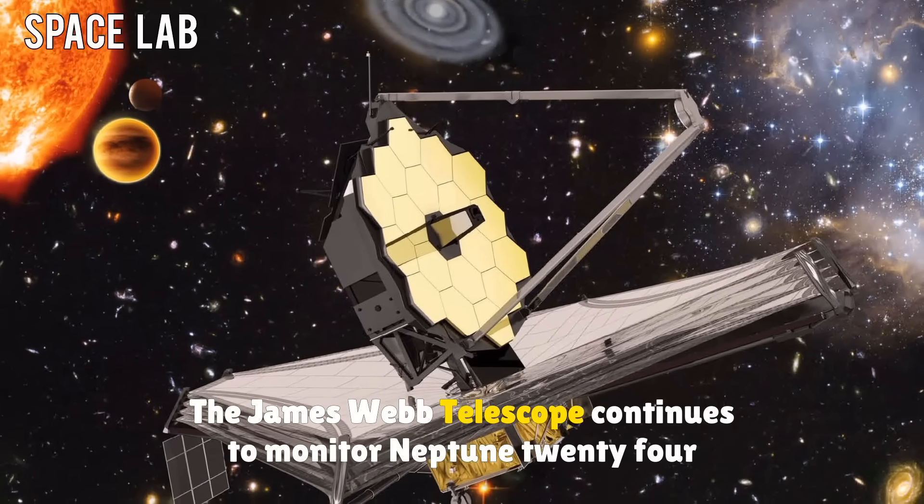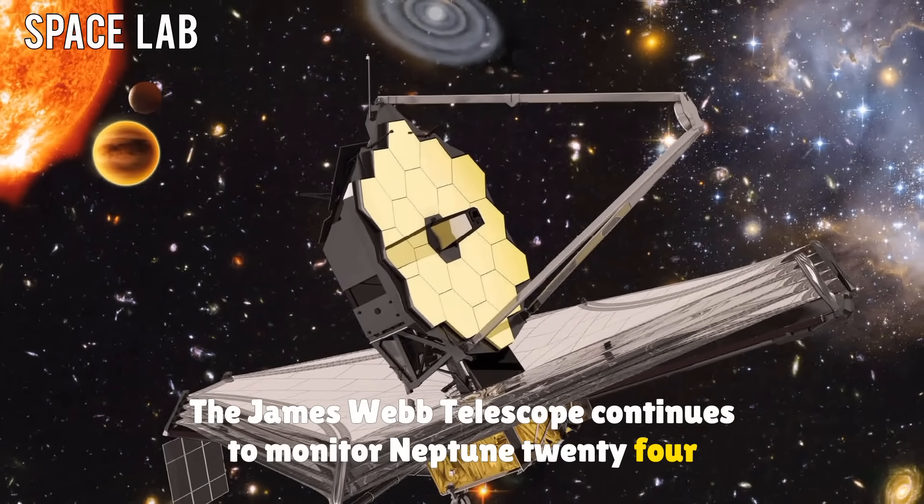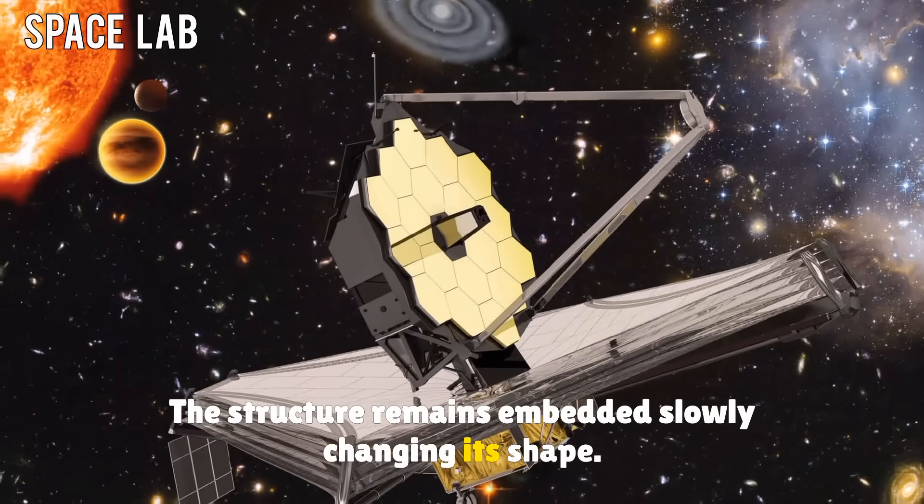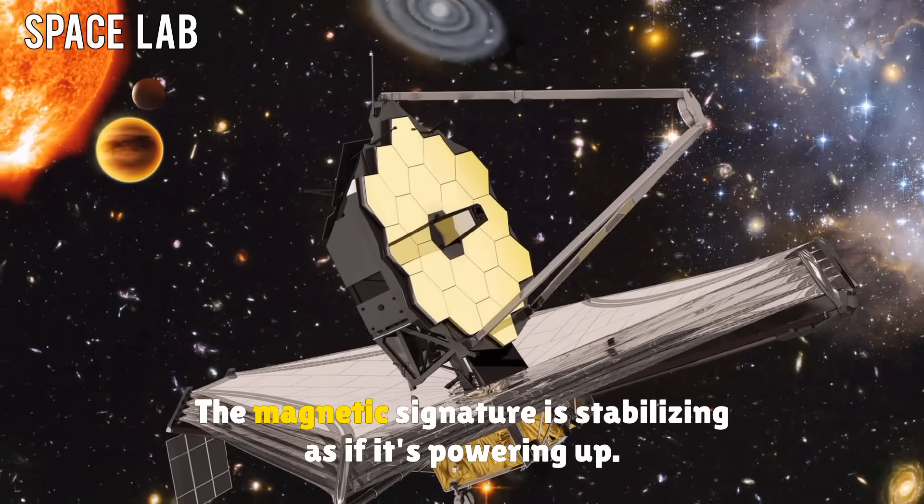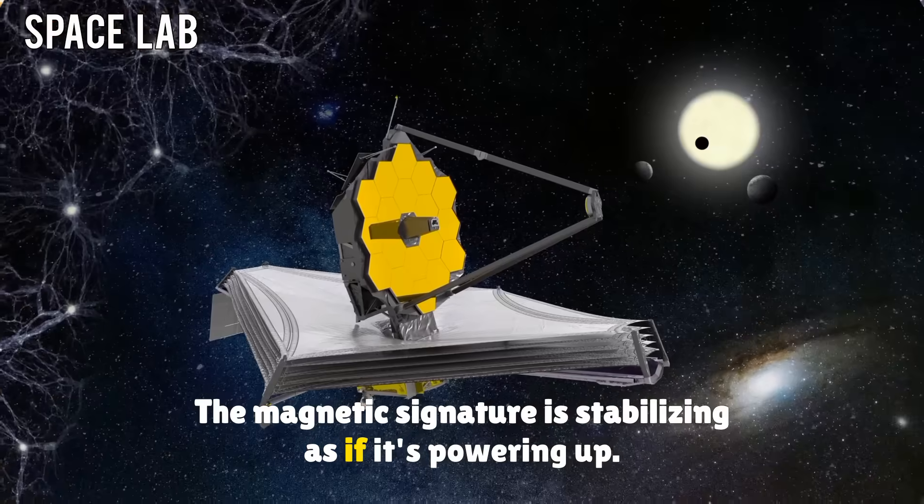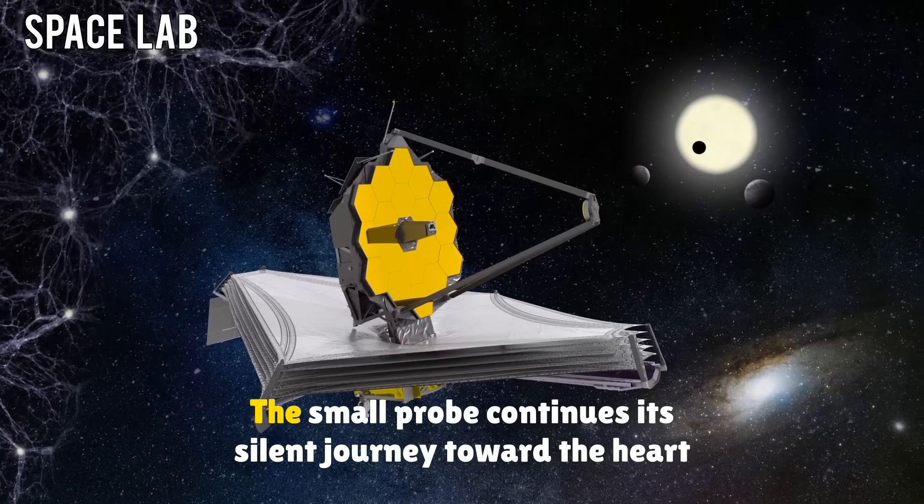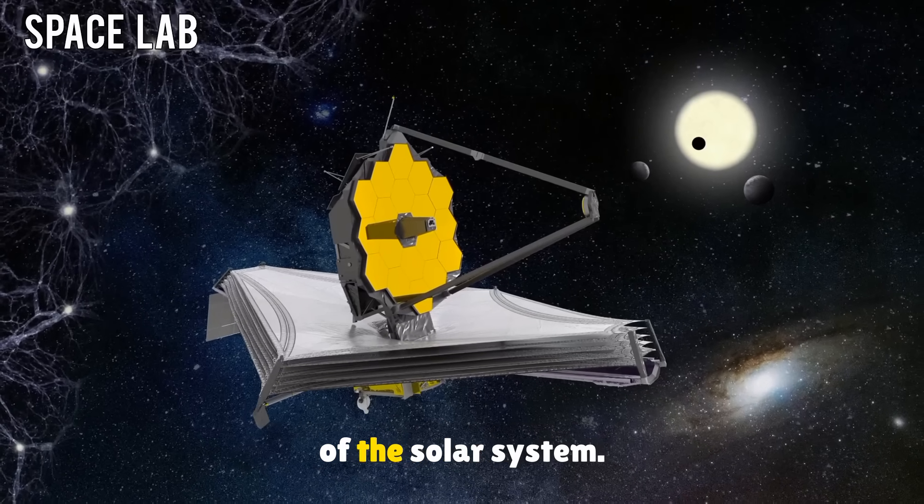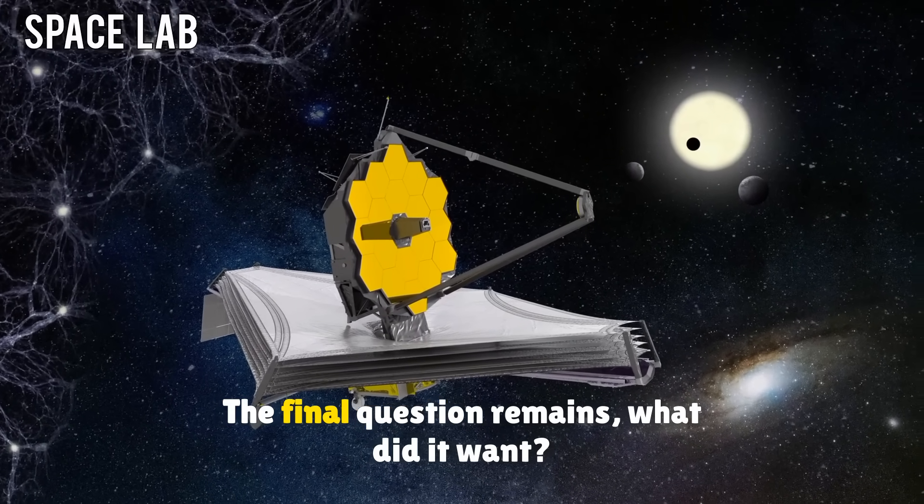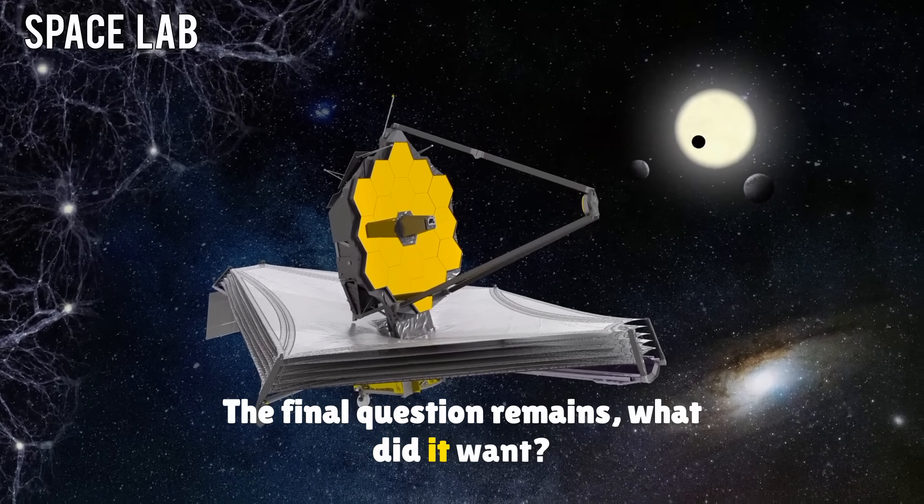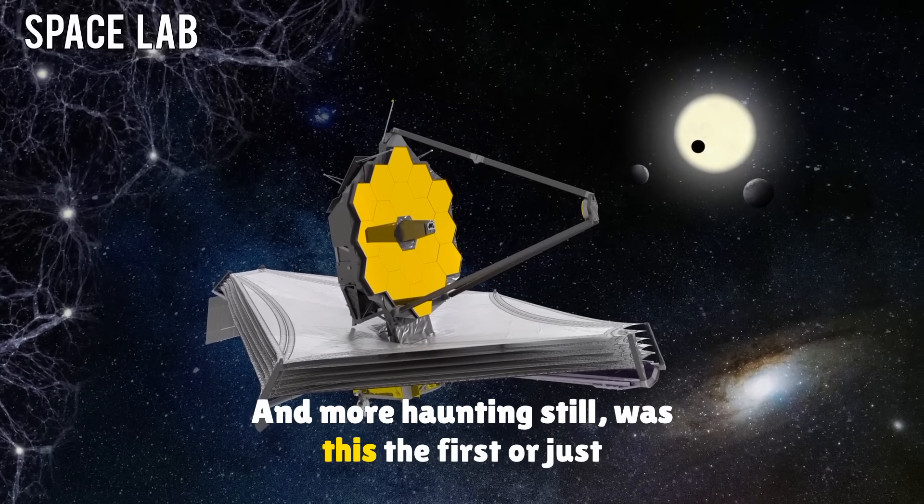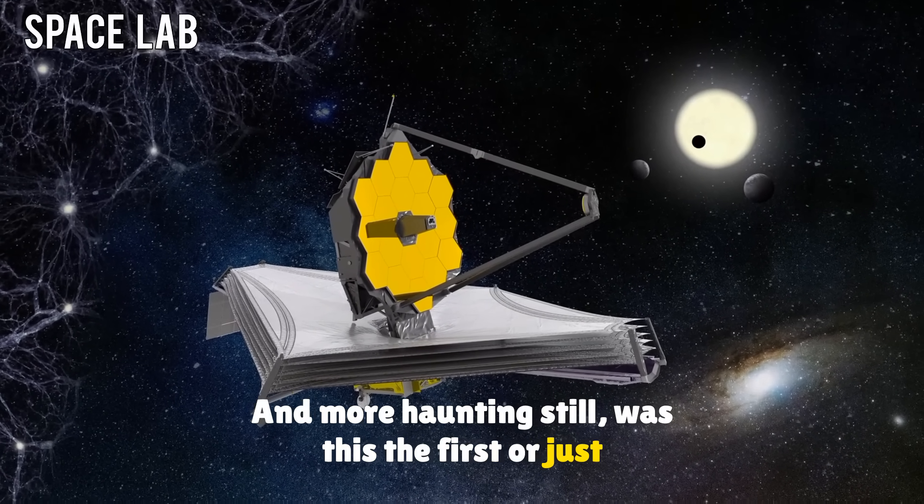The James Webb telescope continues to monitor Neptune 24-7. The structure remains embedded, slowly changing its shape. The magnetic signature is stabilizing, as if it's powering up. The small probe continues its silent journey toward the heart of the solar system. The final question remains, what did it want? And more haunting still, was this the first, or just the beginning?